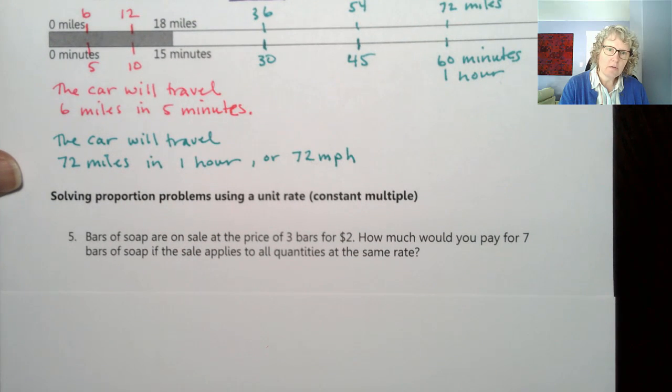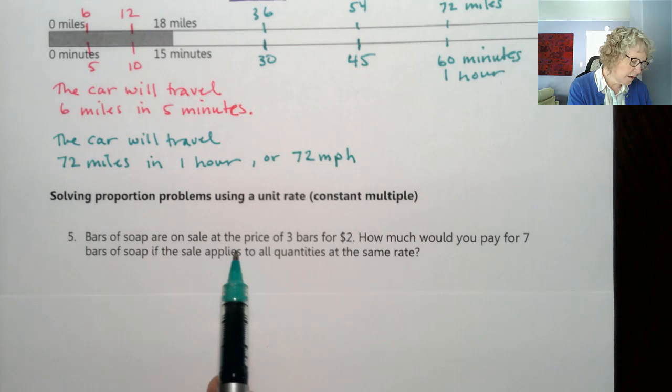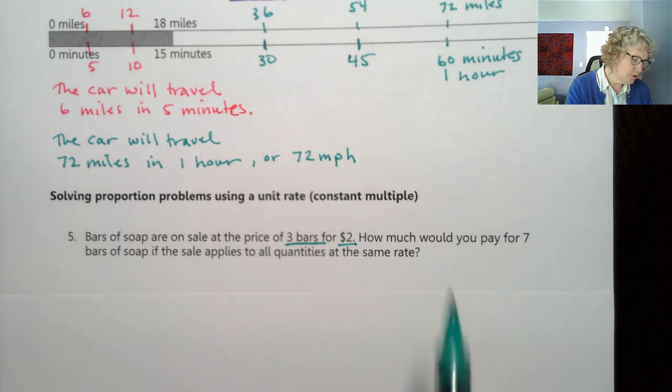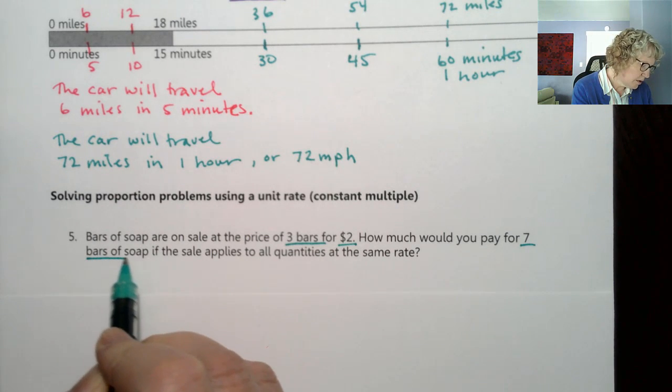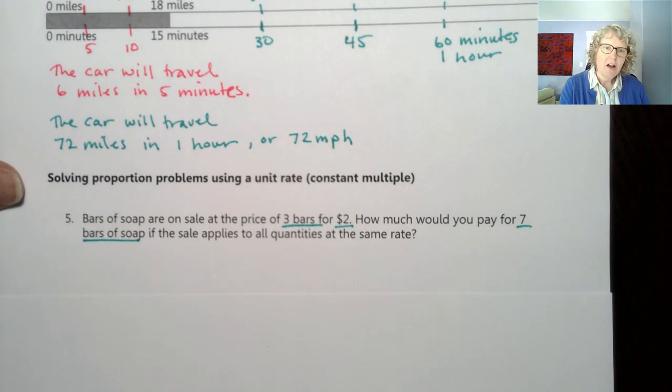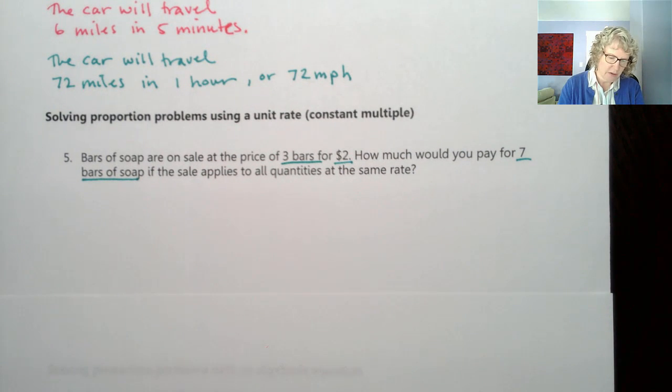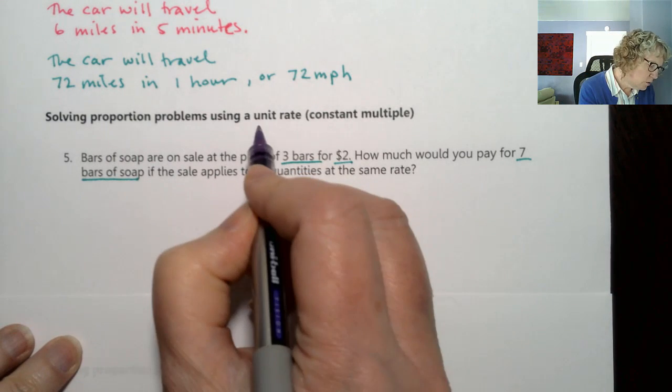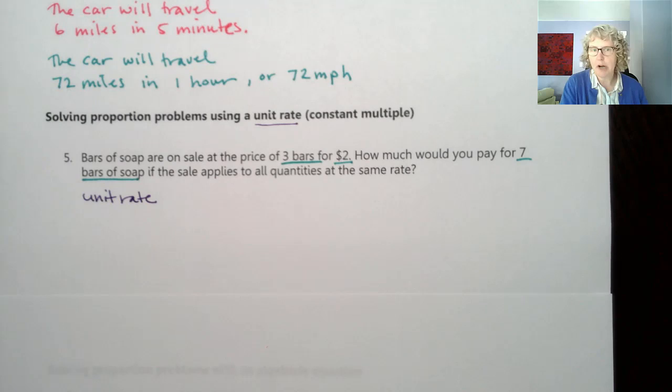Let's try another method. Let's try one where we solve using a unit rate or constant multiple. This one says bars of soap are on sale at the price of 3 bars for $2. How much would you pay for 7 bars of soap if the sale applies to all quantities at the same rate? This is important information because often if you buy more you get a better price, but in this case they're telling us it's the same rate. So we're going to use a unit rate.